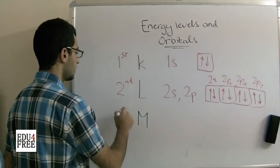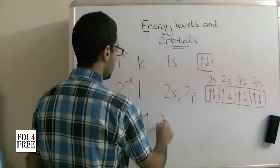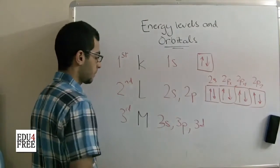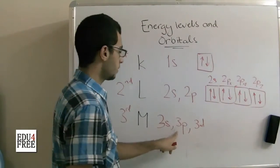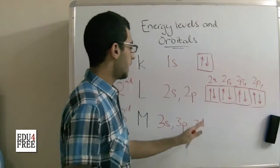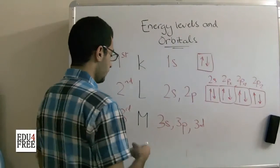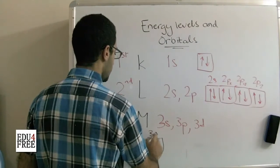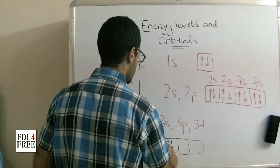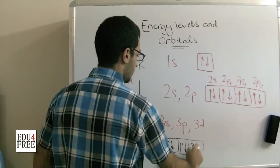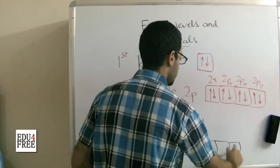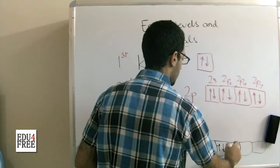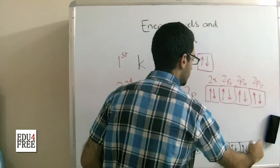The M here, the third one, we got the 3s, the 3p and the 3d. The S orbitals has 1 orbital. The P orbitals have 3 orbitals X, Y and Z. And the D orbitals has 5 orbitals. So the configuration will be like this. We have here the 3s, then we have 3 orbitals for the P and another 5 for the D orbitals.